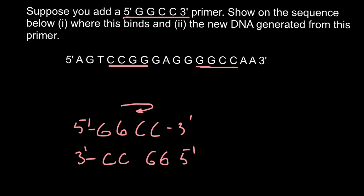This is very easy to solve if we just remember one rule: that DNA strands are antiparallel. So if we have 5' N here, the other strand of the DNA would have 3' N here. If we have 3' N here, the other strand of the DNA would have 5' N here.